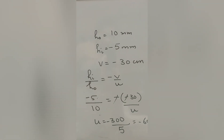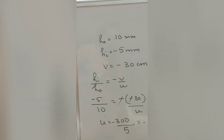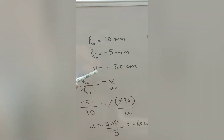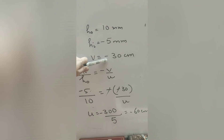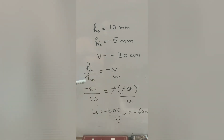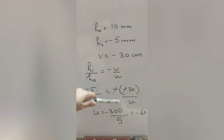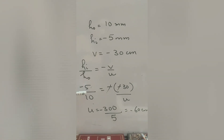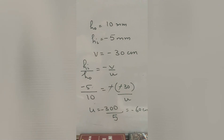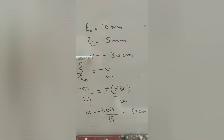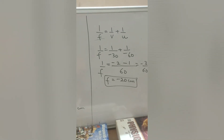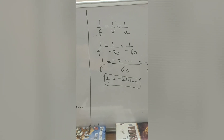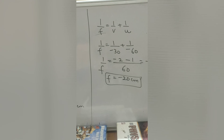Image formed in front of the mirror confirms it is real. Using HI/HO = minus v/u: (minus 5)/10 = minus(minus 30)/u, giving u = minus 60 cm. Note: no need to convert mm to cm since it is a ratio and units cancel. With v = minus 30 and u = minus 60, applying the mirror formula 1/f = 1/v + 1/u gives focal length = minus 20 cm.